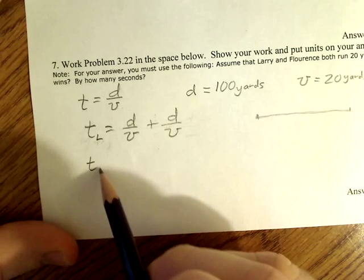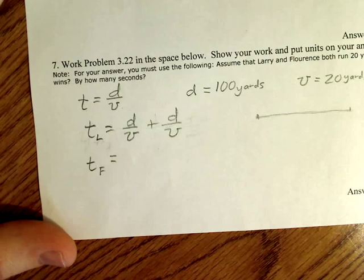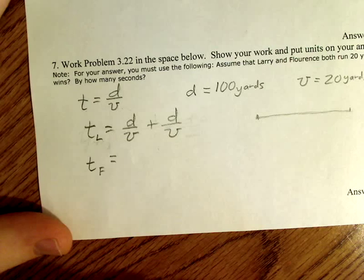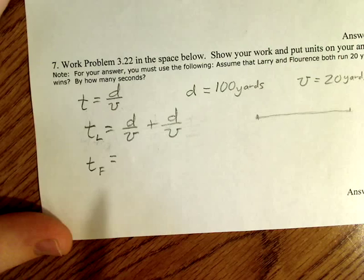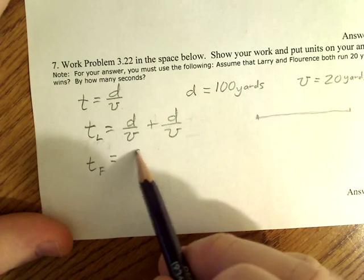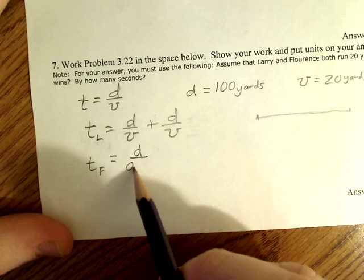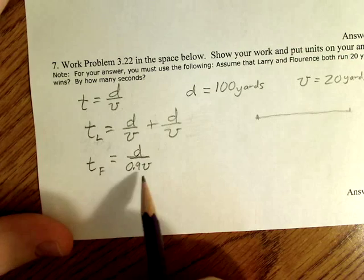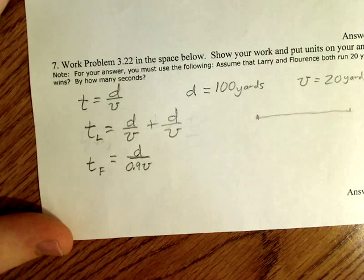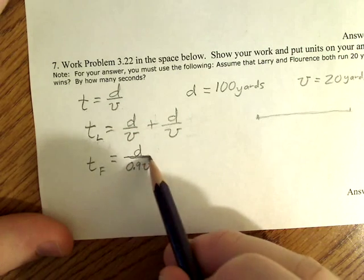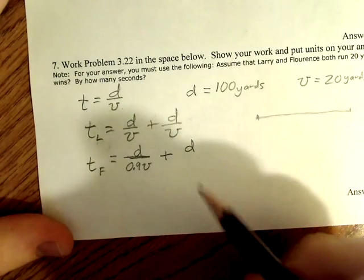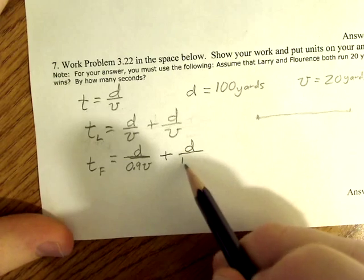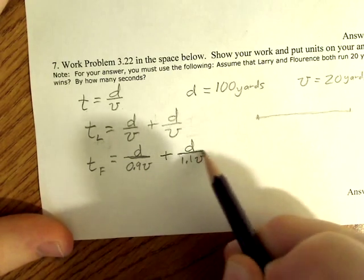Now Florence is the other racer and they're affected by the wind. So there's a 10% drop in speed for Florence when running against the wind. So the way that you indicate that drop in speed is like this 0.9v. So they drop by a tenth in their speed. That 0.9 needs to go in the denominator. And then on the way back, the wind helps them by 10%. So 1.1v like that.